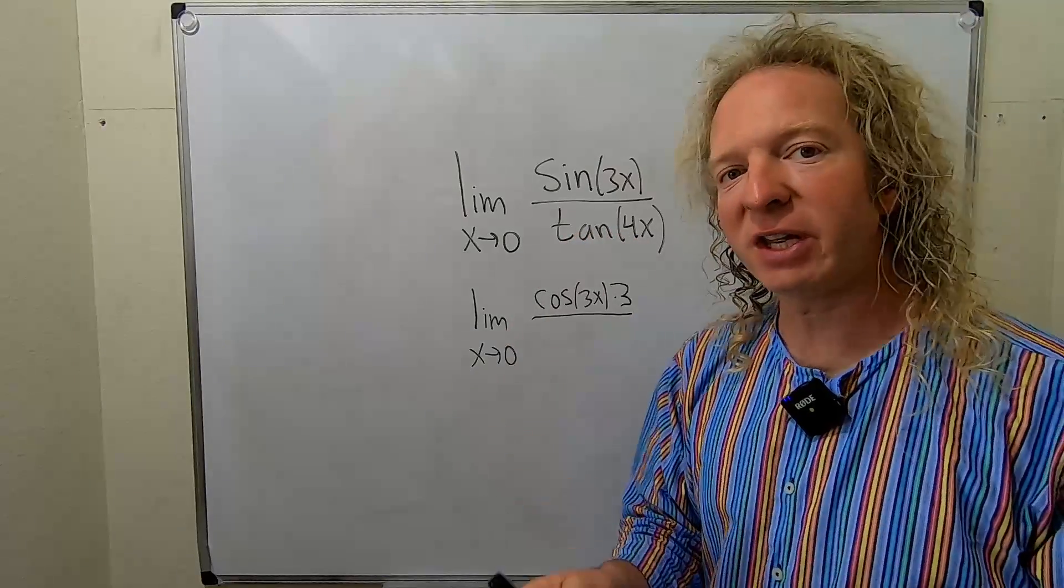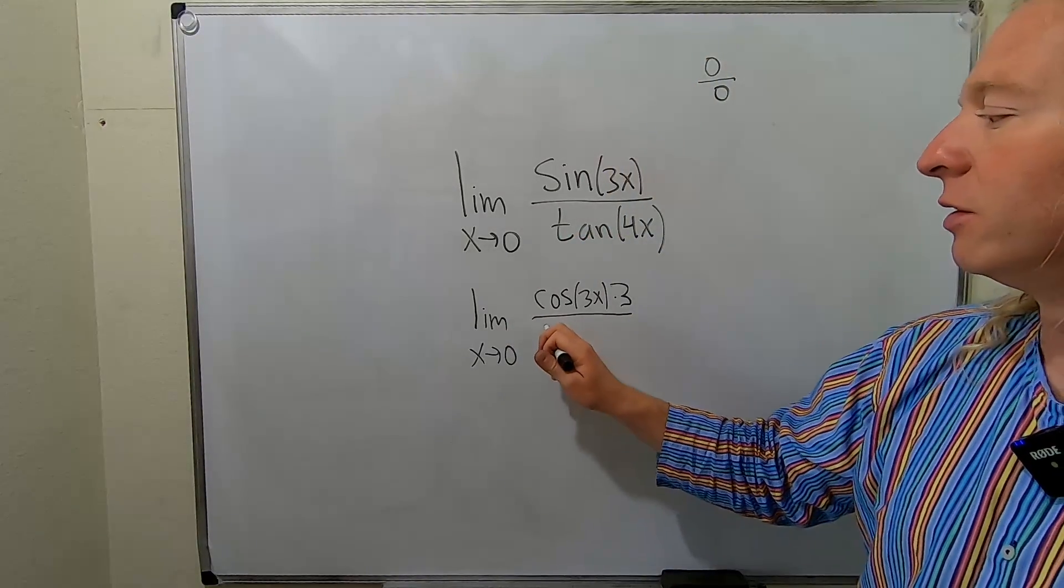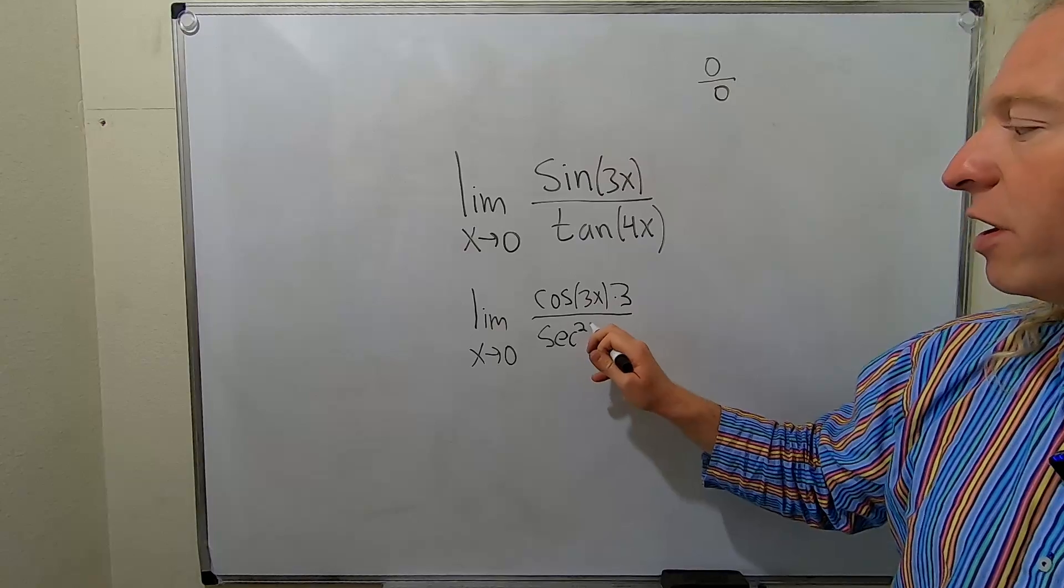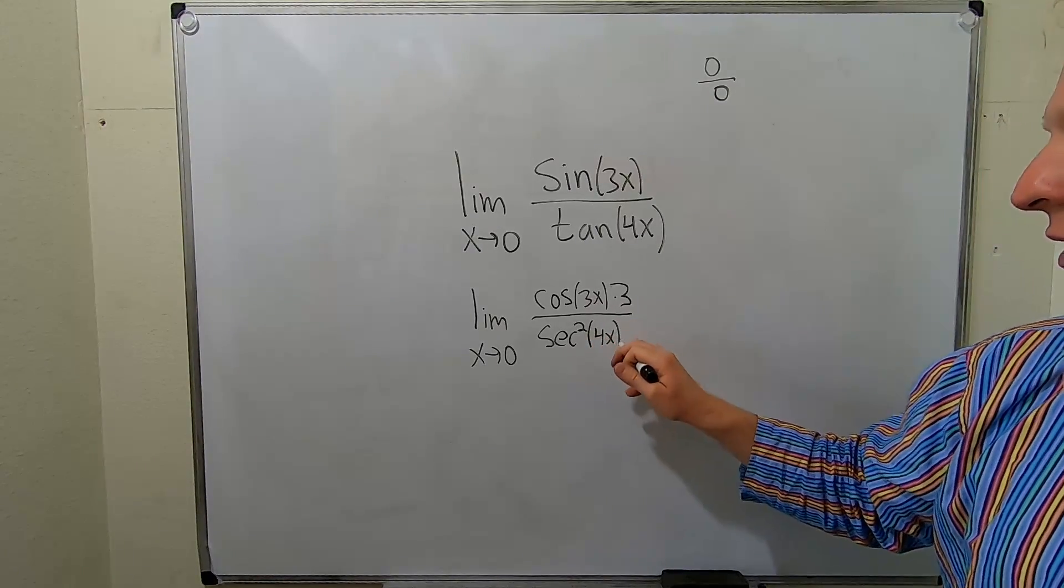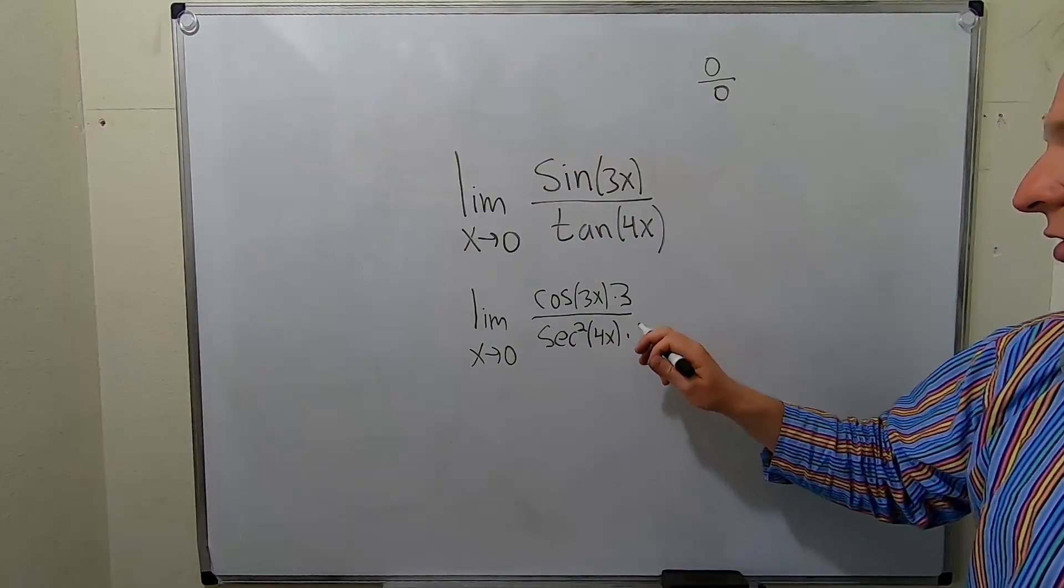And then the derivative of tangent is secant squared. This is secant squared of 4x times the derivative of the inside, which is 4.